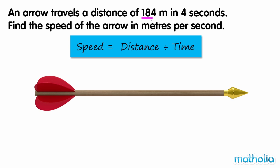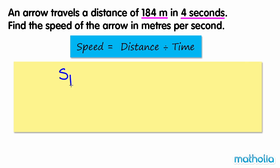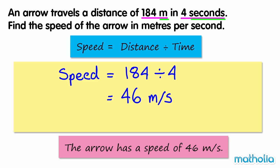We know the distance is 184 meters, and the time is 4 seconds. 184 divided by 4 equals 46. Our speed is given in meters per second. So the speed of the arrow is 46 meters per second.